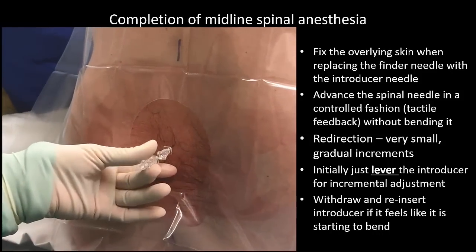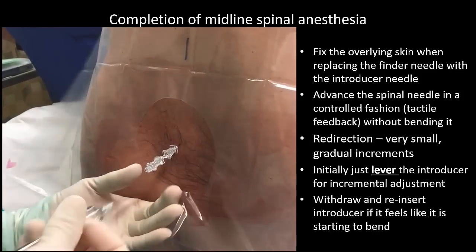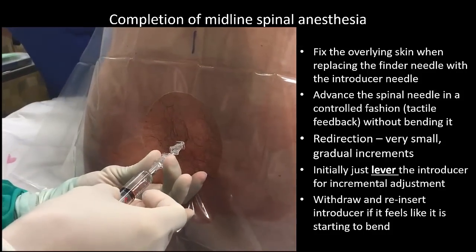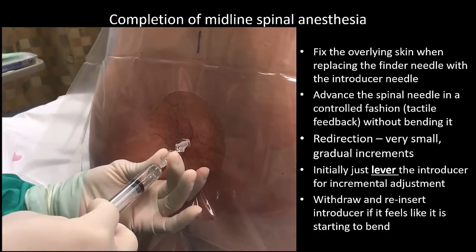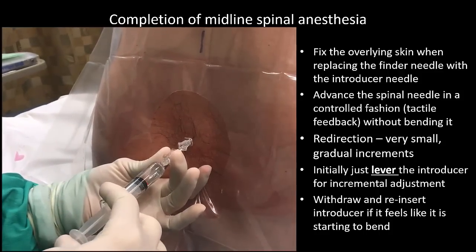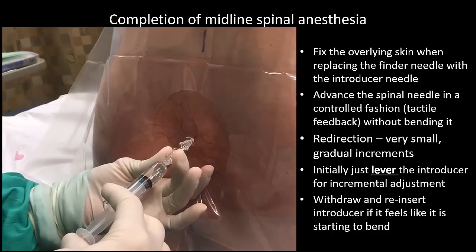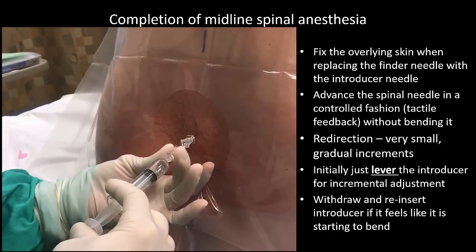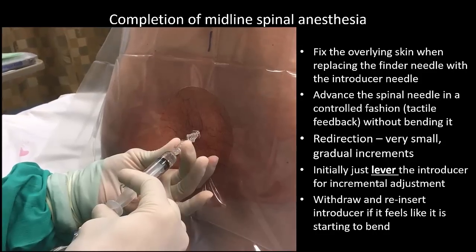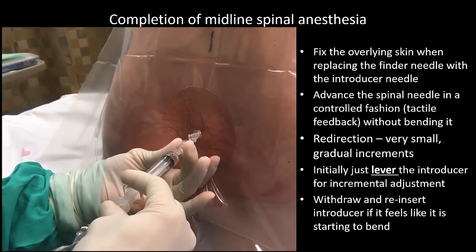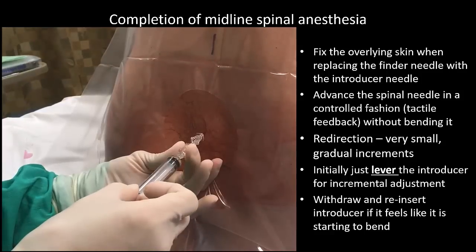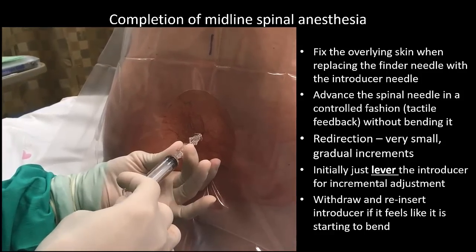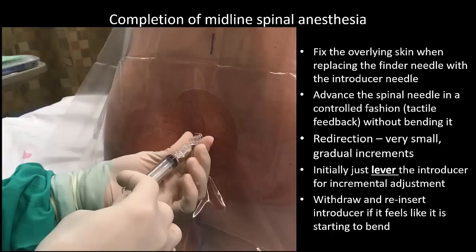Once CSF backflow is obtained, I attach the syringe with a gentle push and twist to get a good seal, and then aspirate very gently. My primary aim is not to dislodge the needle — I don't need to aspirate one mil or even half a mil of CSF; I just need to sense that the plunger moves. To minimize risk of dislodgement, I personally don't aspirate in the middle of injection. I aspirate gently at the end to confirm that the needle is still in the space and that I have likely delivered all of the dose into the intrathecal space.